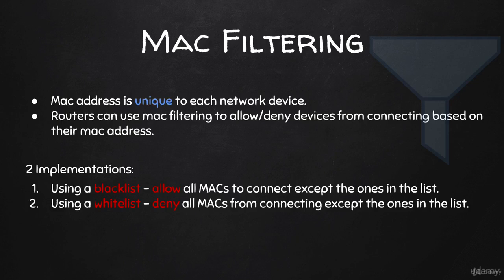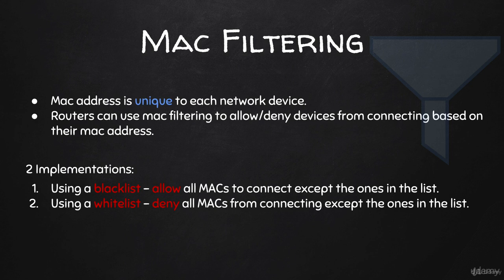Another thing that might prevent you from connecting to the target network, even if it's an open network or if you know the key, is if the network uses MAC filtering. MAC filtering allows or prevents devices from connecting based on their MAC address. The first method is a blacklist, which blocks listed devices but allows everyone else. This can be easily bypassed by changing your MAC address to a random one.